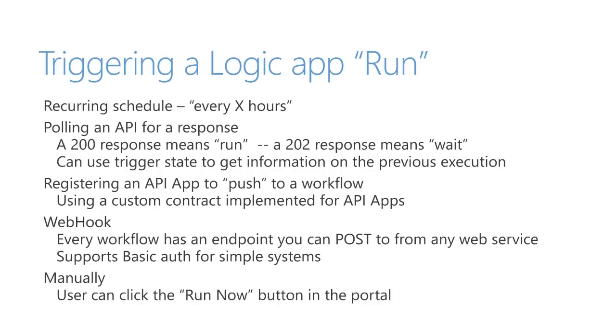Historically, people may have written services that poll internally — an FTP connector, for example, might wake up every minute and poll to see if there's a new file. We don't need to do that anymore because the polling has been externalized into the logic app system. We also support the ability to pass state from trigger execution to trigger execution. So if I have an FTP connector, I can look at the previous execution of that trigger and see what files it returned, so I don't return duplicate files the next time it executes. This allows connectors to be stateless, with state living in the workflow engine.